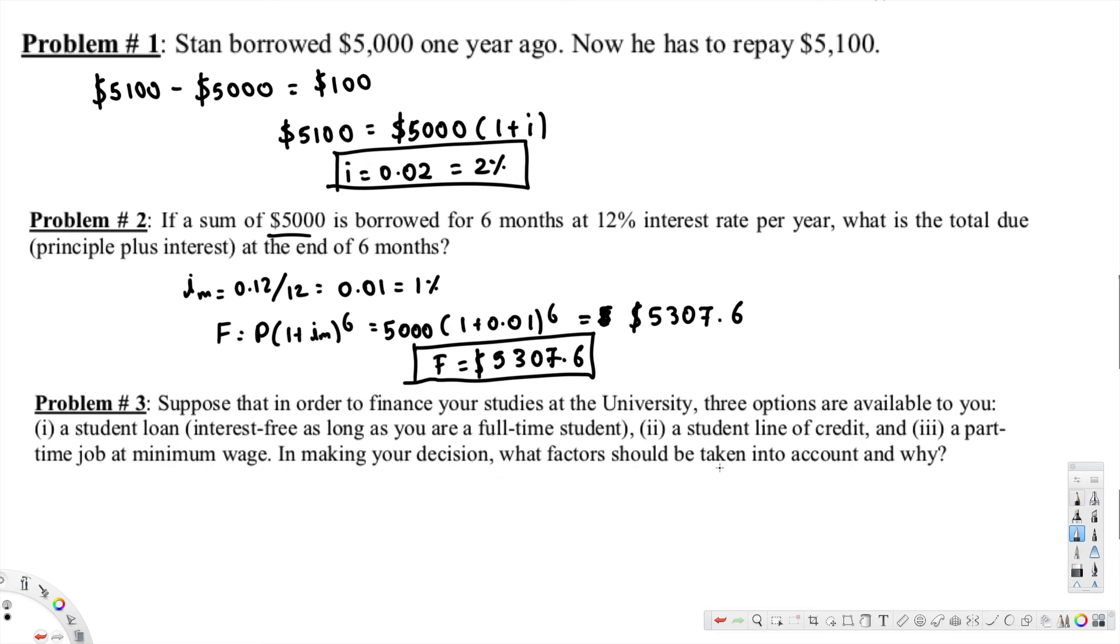Now here, which one are we going to choose? Student loan - there's no interest until we finish the studies. So comparing a student line of credit and student loan, student loan is the better choice because there's no interest until we finish the study.